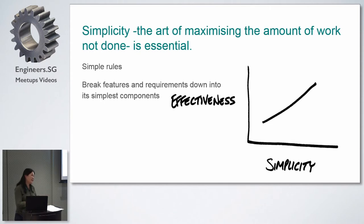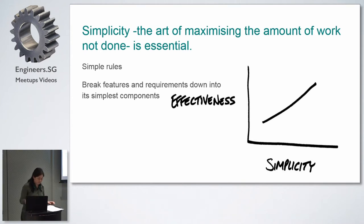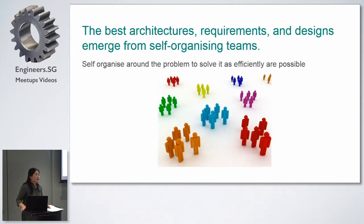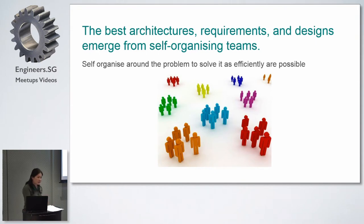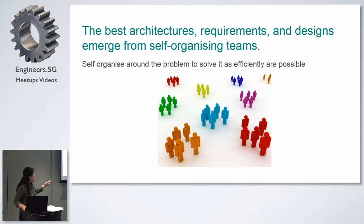Simplicity is the key — the simpler it is, the better and more effective it is. Simple requirements and simple design are always best. Self-organizing teams means no managers are assigned — the team organizes themselves. They pick up tasks they know they can do. The customers set the priorities, and the team picks tasks from the priority list. Surprisingly, this actually comes up with a better product.